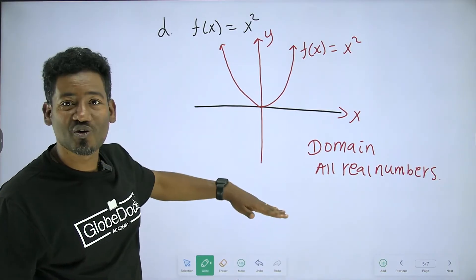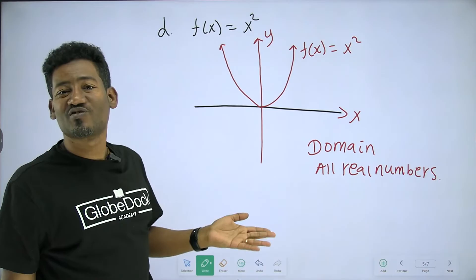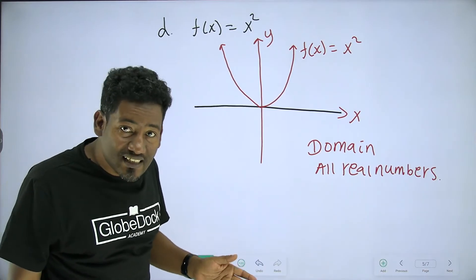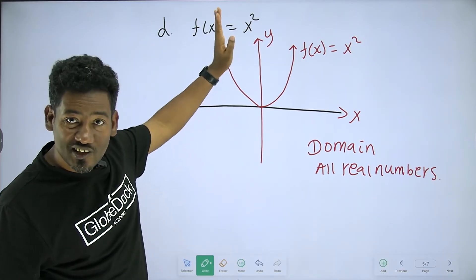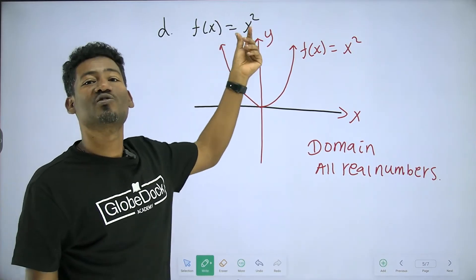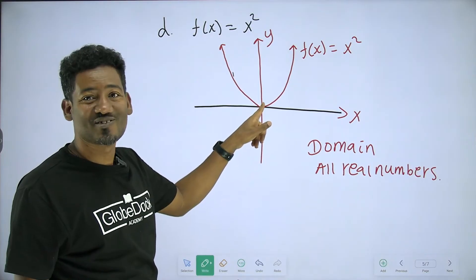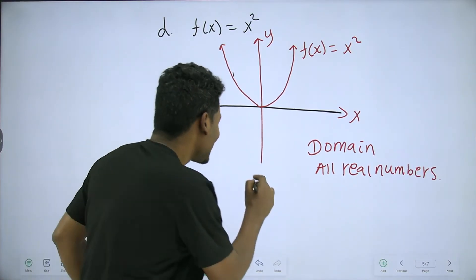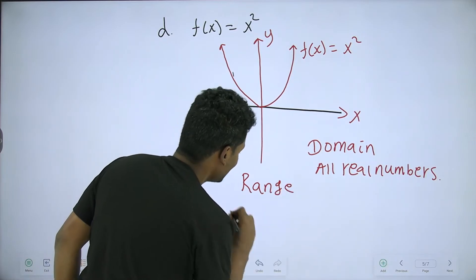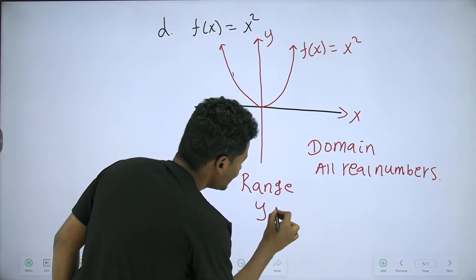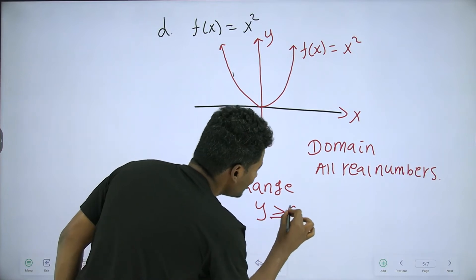The y-value is never negative. Why is the y-value always positive or zero? Because x squared is always non-negative. Range: y is greater than or equal to 0.